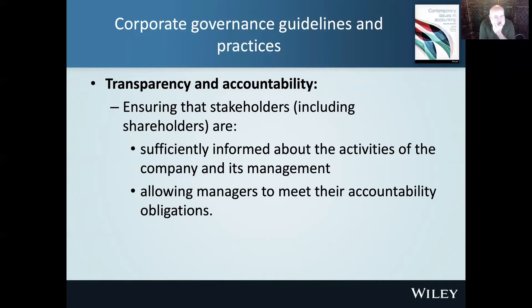In Australia, we have eight principles of corporate governance on the ASX — there used to be ten, but they were merged and simplified. Organisations don't have to follow the principles of corporate governance, but if they're listed on the stock exchange and don't comply, they have to explain to the market and investors why they didn't comply. As a result, you find that most companies do comply with those eight principles.